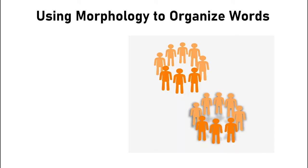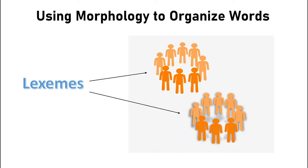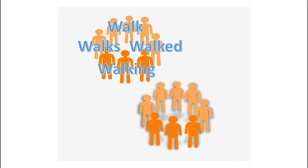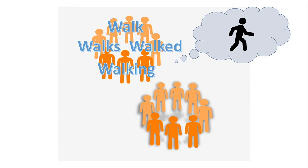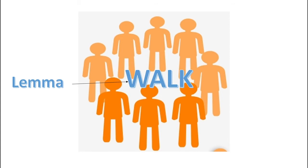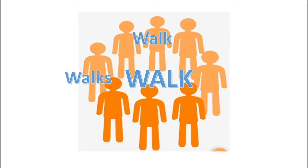We can also think about words as belonging to groups or lexemes. In the lexeme for 'walk,' for example, there are four inflected forms: walk, walks, walking, and walked. Each contains the same semantic information — i.e., the action of walking — but they all differ in terms of the grammatical information encoded in them. At the center of the lexeme is the lemma, or the root: 'walk.' The lemma undergoes morphological inflection to produce the other inflected forms.